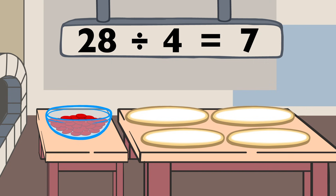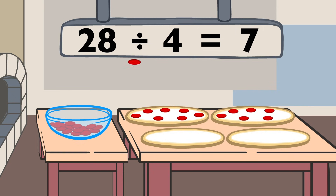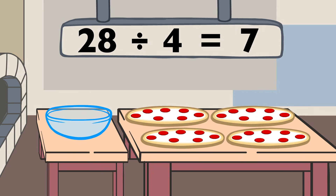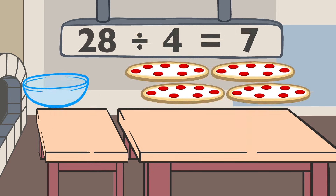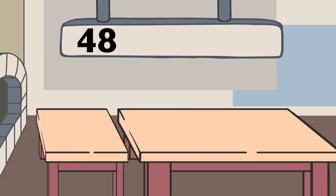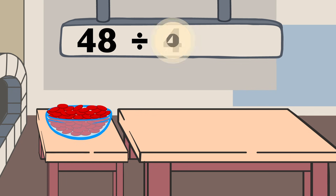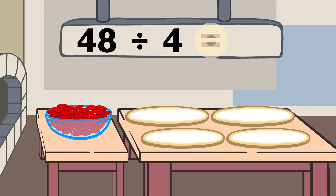Seven. Forty-eight divided by four equals twelve.